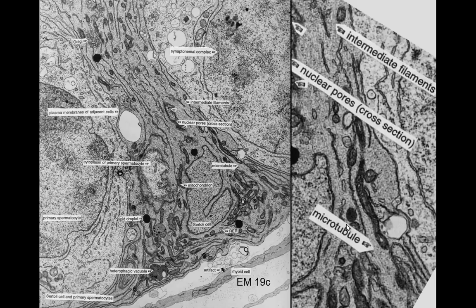There's mitochondria right there. This is a Sertoli cell, a nurse cell between two germ cells in the testis. Here we can see a very long microtubule — you can see it right in through there. Very, very long microtubules you'll be able to see in there, and we can see a little higher magnification right there.